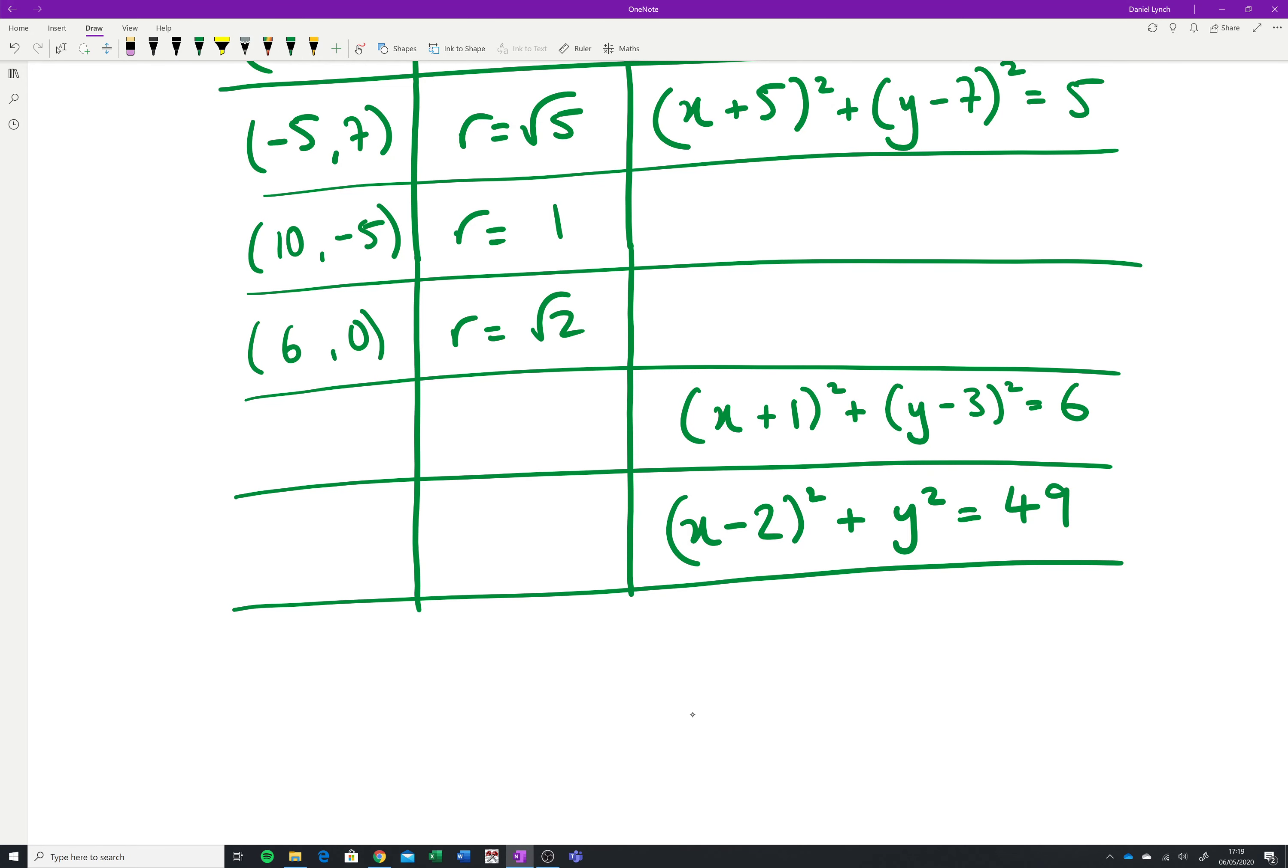And the answers are, I'll just write them in black maybe, they are x minus 10 squared added to y plus 5 squared. Again the signs just change and it's equal to 1 squared which is 1.